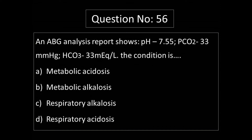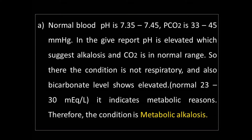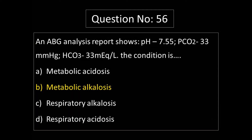Normal blood pH is 7.35 to 7.45. Partial pressure of carbon dioxide normal range is 33 to 45 mmHg. The pH of 7.55 indicates alkalosis. The carbon dioxide partial pressure is within normal range, indicating a metabolic — not respiratory — condition. Therefore, the answer is Option B: metabolic alkalosis.